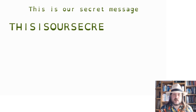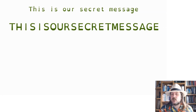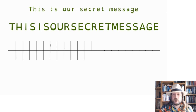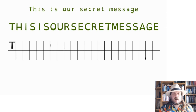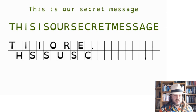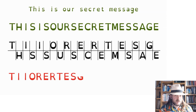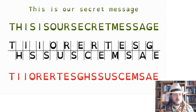First we write out our secret message from above, then we smoosh it together so we don't have any spaces — you can leave spaces in, but it can get confusing when two end up together, so I've taken them out. Now we draw our grid — it's easier to see with the line. We write out the message again, alternating between the top and bottom row: T on the top row, H on the bottom, I on the top, S on the bottom, and I on the top row again, and so on until we've written the whole message.